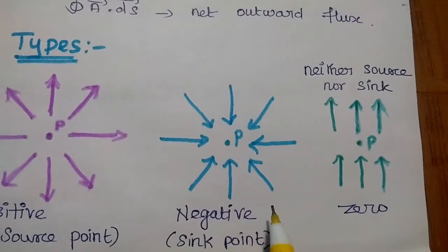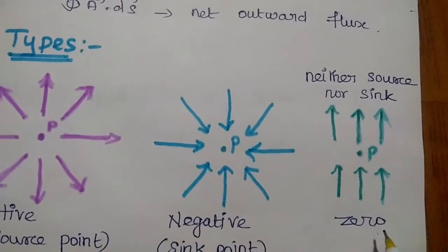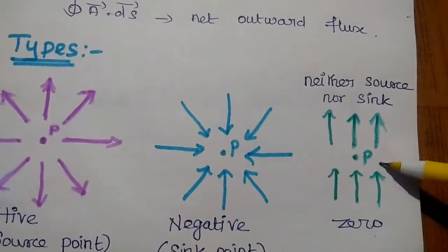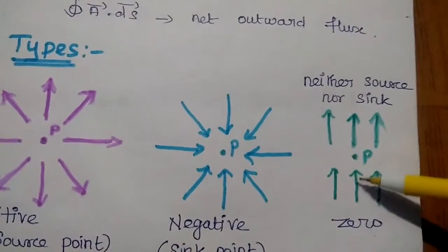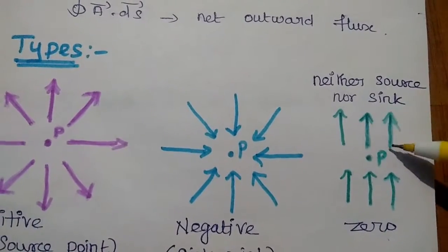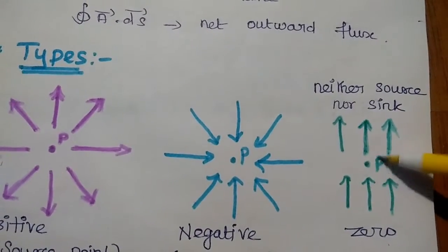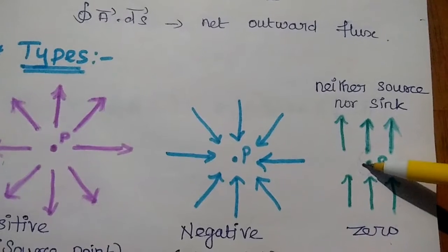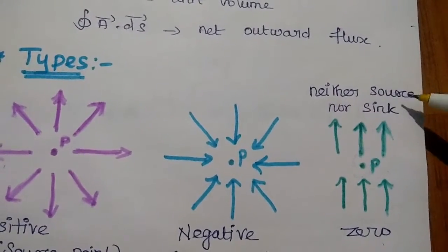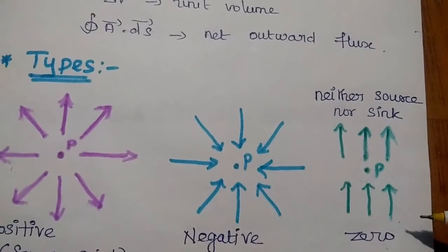The third type is zero divergence. Zero means, consider a point where some flux lines are coming and passing through the point with the same velocity in the same direction. Then there is no effect on this point, and this point is neither a source nor a sink. So this is called zero divergence.